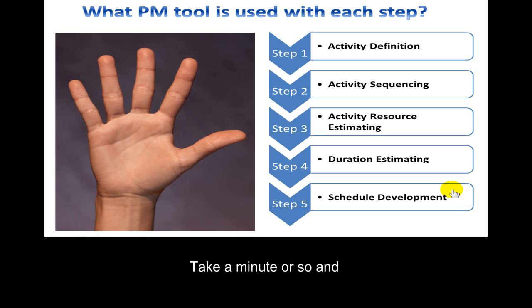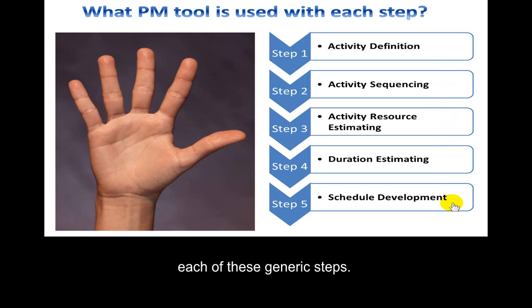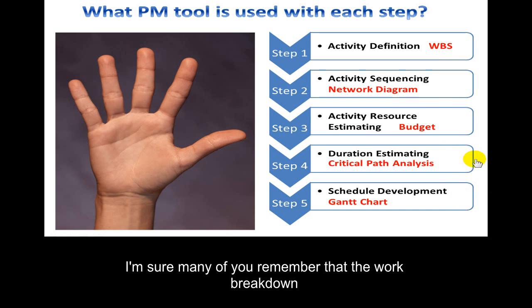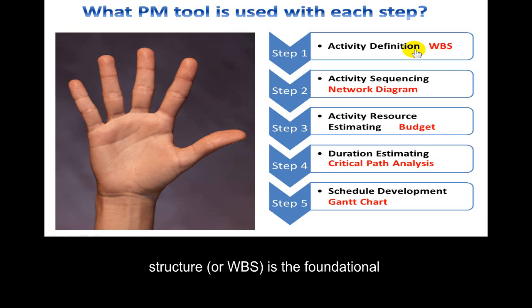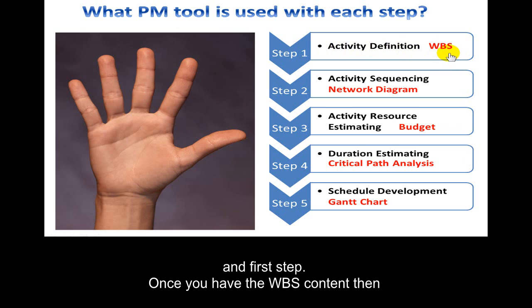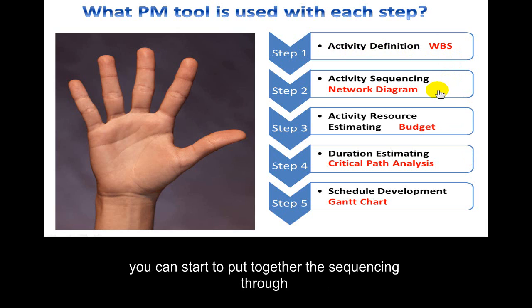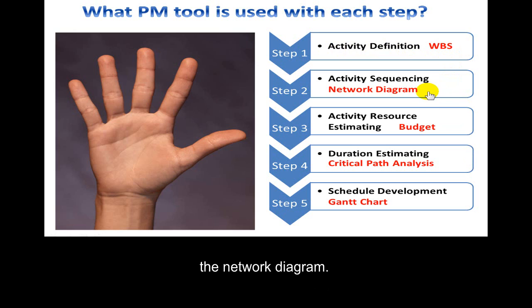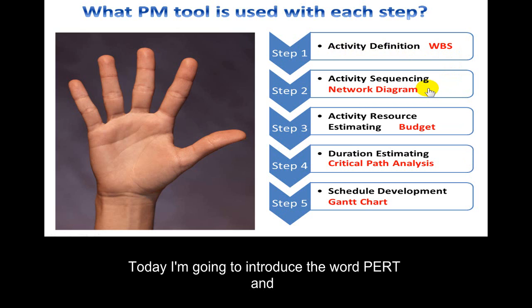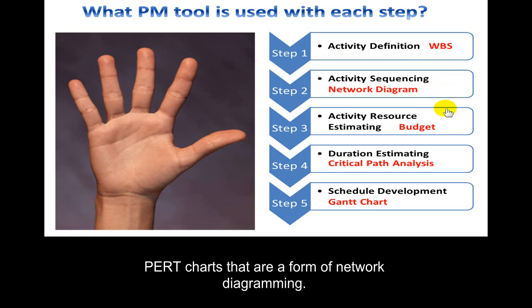Take a minute or so and try to remember what tool is used with each of these generic steps. The Work Breakdown Structure, or WBS, is the foundational and first step. Once you have the WBS content, you can start to put together the sequencing through the network diagram. Today I'm going to introduce the word PERT and PERT charts, which are a form of network diagramming.